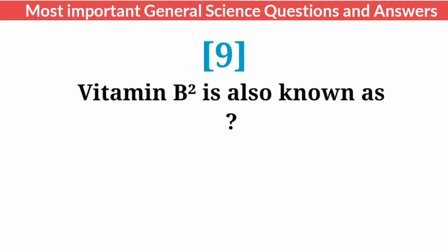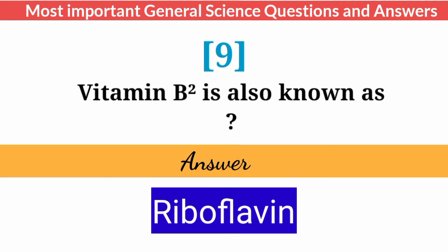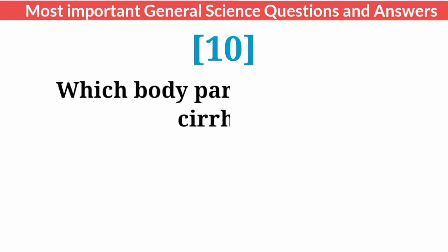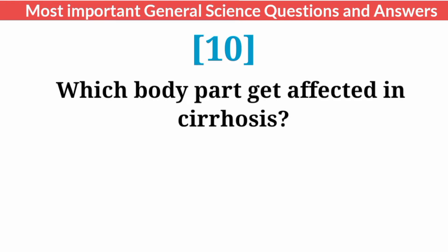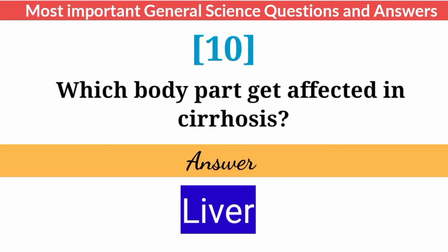Vitamin B2 is also known as? Answer: Riboflavin. Which body part gets affected in trench fever? Answer: Liver.